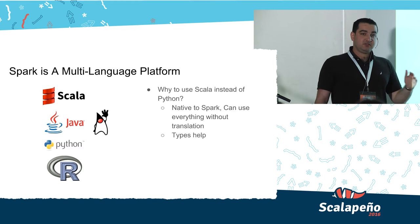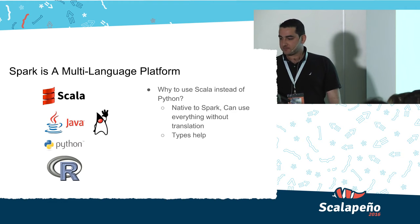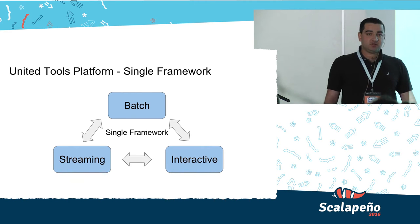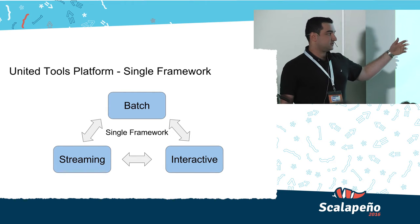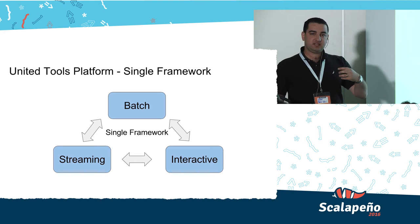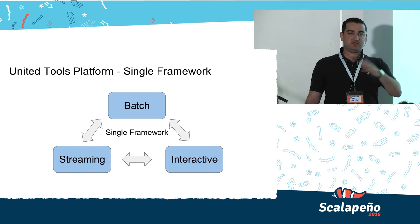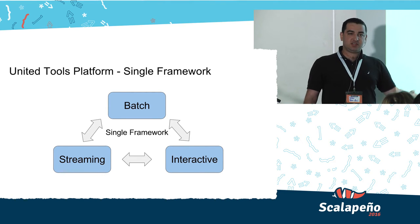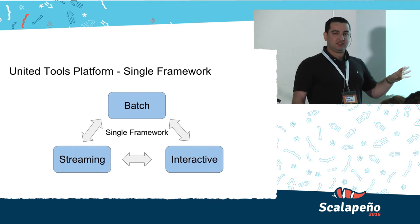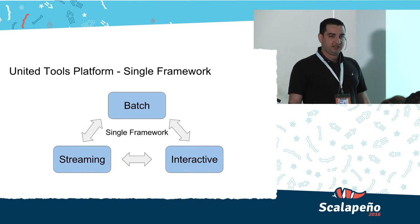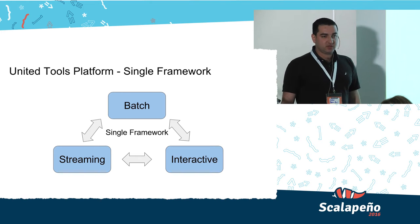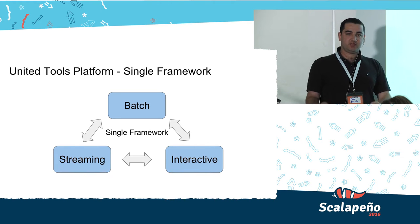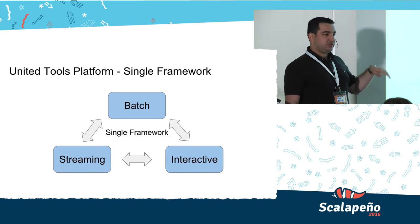So what is Spark? It's actually a unified platform — in a single framework we can make all these operations possible. First, batch mode: we can do batch analytics, read lots of data, do calculations and transformations, and write aggregations into a persistency layer. We can also do it interactively without writing a full application — for data scientists, this is like heaven, working in a dynamic environment without needing to compile code. And we can use actual streaming as well, which is micro-batch processing, but the same model we use every time we write Spark code. We write the same code and just execute it in a different manner.